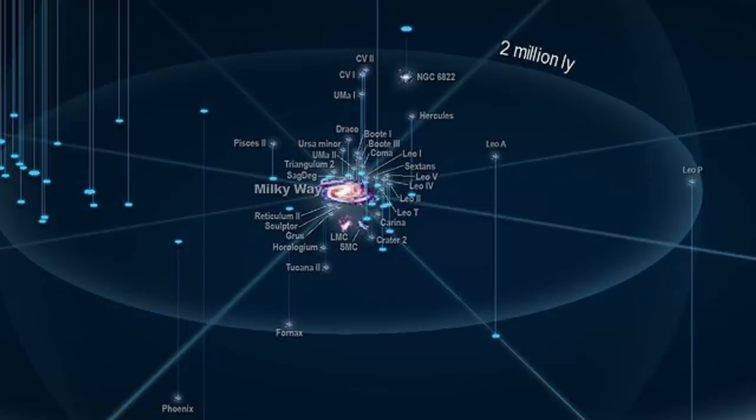Anyway, so right here we have roughly around 60 galaxies with quite a few of them named Leo. There is Leo 1, Leo 2, Leo 3, Leo 4.